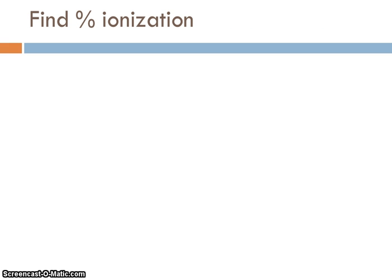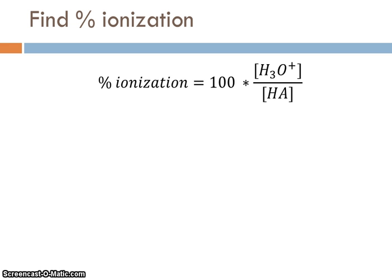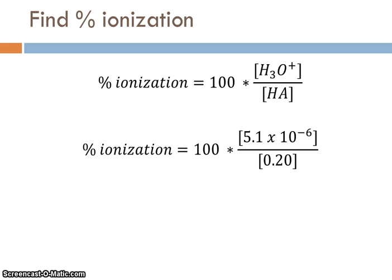The last thing we were asked to do was to find the percent ionization. What percentage of the original phenol molecules actually dissociated to release H plus ions? To calculate this, you do the hydronium ion concentration that we found from the pH over the original acid concentration, the phenol concentration, which was 0.2. So we just substitute and evaluate, and we end up getting a percent ionization that is 0.0026%. It's a tiny, tiny, tiny amount, which is not atypical for these weak acids.